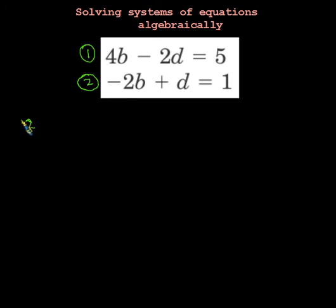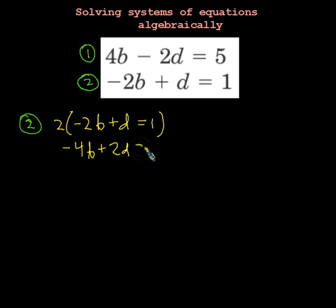I'm going to rewrite equation number 2. Just to remind myself of what I'm doing, I'm going to write it out: 2 times negative 2B plus D equals 1. Then I'll actually multiply it out, so negative 4B plus 2D equals 2.